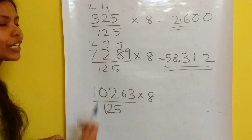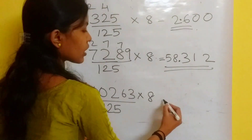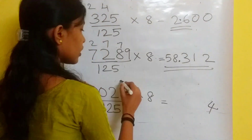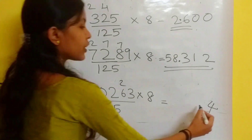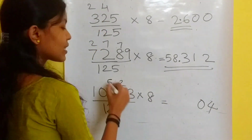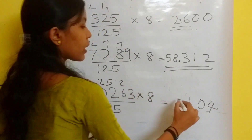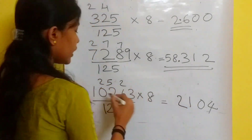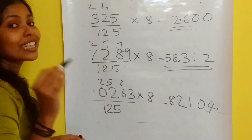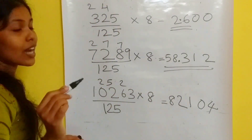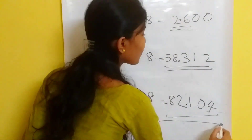Finally, moving to a 5-digit number. 8 into 3 is 24, 6 into 8 is 48 plus 2 is 50, 2 into 8 is 16 plus 5 is 21, 0 into 8 is 0 plus 2 is 2, 1 into 8 is 8. The answer should have three digits after the decimal point — this is the answer.